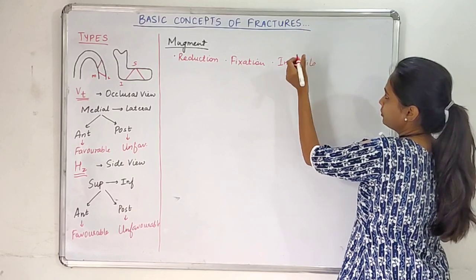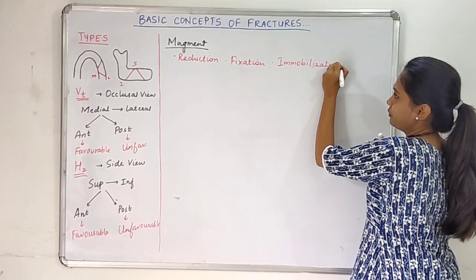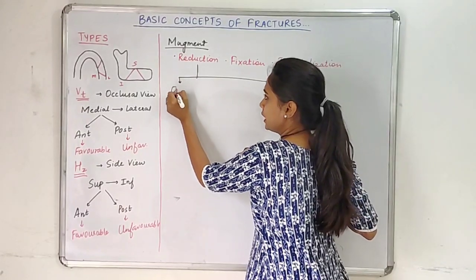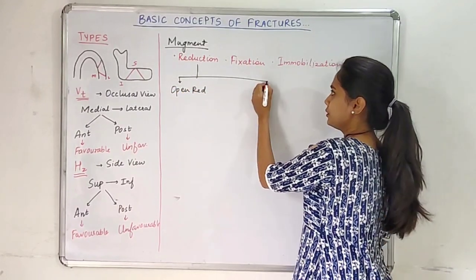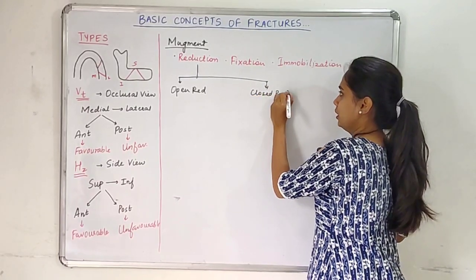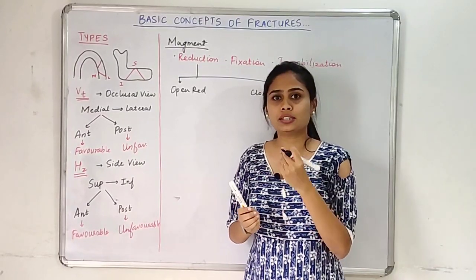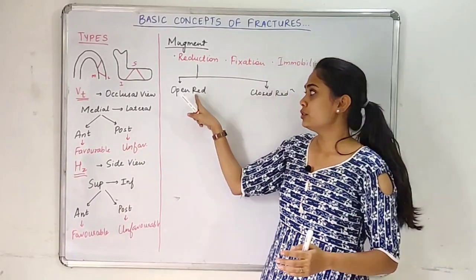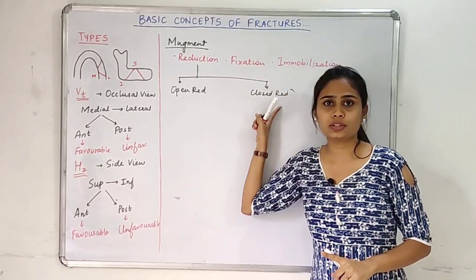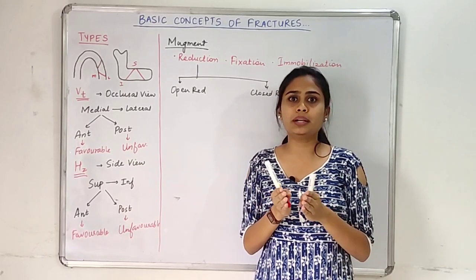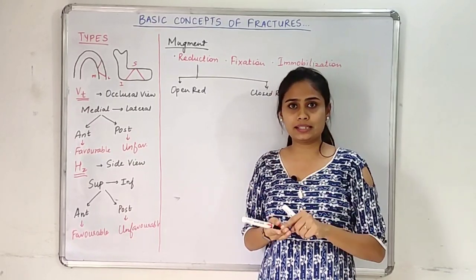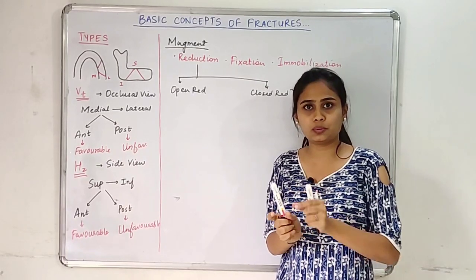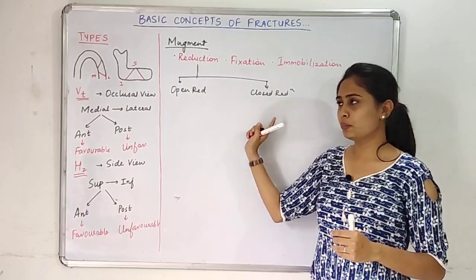In reduction, we have two types: open reduction and closed reduction. Open reduction means that you open the site where the fracture is present — you put an incision and expose that site. Closed reduction means you approximate the fracture fragments without exposing that site; you do it externally. Reduction means you are approximating or reducing the space between the fracture lines.